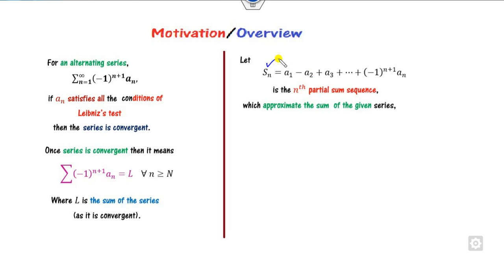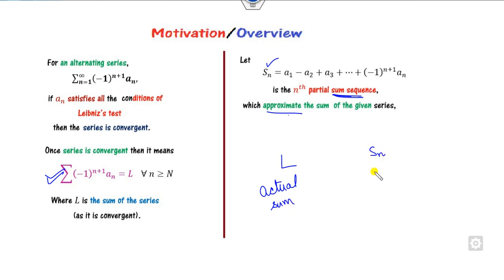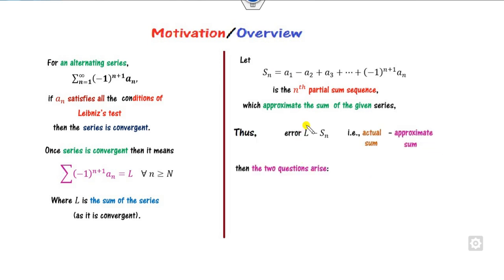If I consider S_n, which is the nth partial sum of the sequence, this is called the approximate sum of this infinite series. So once you have the sum L, which is the actual sum, and S_n, which is the approximate sum, you have two different sums — the first question that arises is what will be their difference. The error is L minus S_n, that is the actual sum minus the approximate sum.